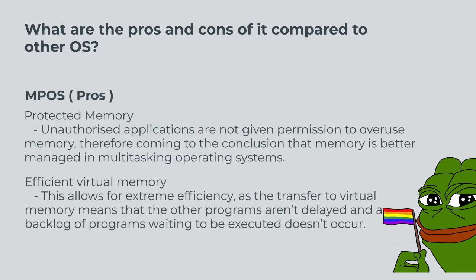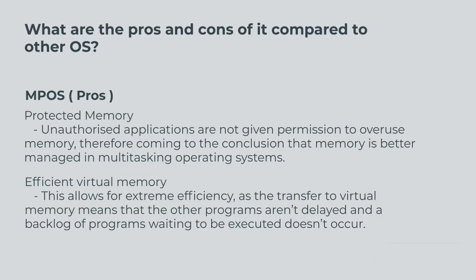Multiprocessing OS pros: protected memory. Memory is better managed in multitasking operating systems. Efficient virtual memory allows for extreme efficiency, as the transfer to virtual memory means that other programs aren't delayed and a backlog of programs waiting to be executed doesn't occur.